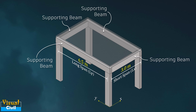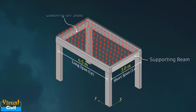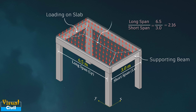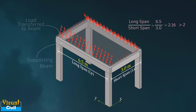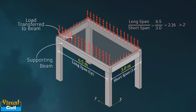Now the slab is supported on all four edges. Here the ratio of longer span to shorter span is equal to 2.16. Based on the yield line theory, when this ratio is more than 2, the majority of the total load is carried by the short span, that is by the beams supporting the long edge of the slab.